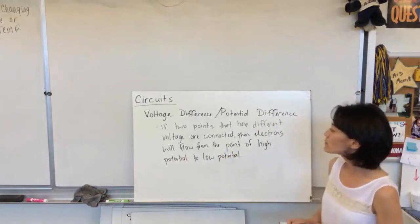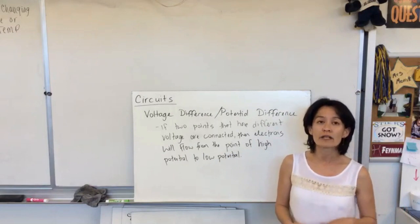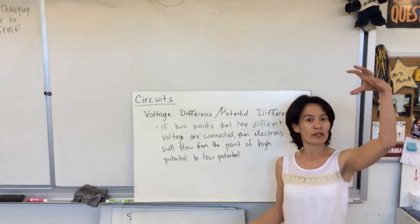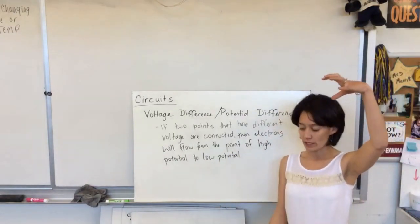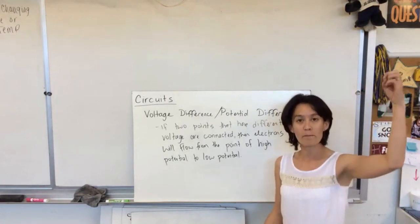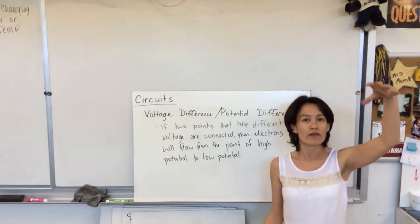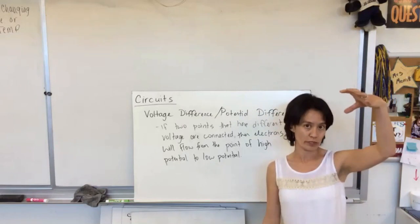And this is kind of similar to gravitational potential difference. If you have a point up here that has a certain amount of gravitational potential, and a point down here with a certain gravitational potential, and you provided a pathway for mass to travel through those two points, then the mass is going to travel from high potential to low potential.